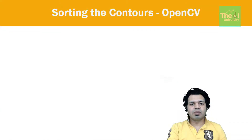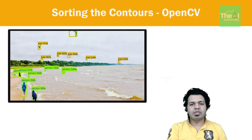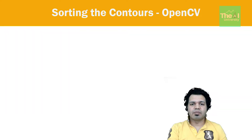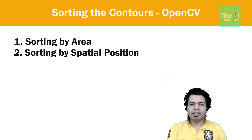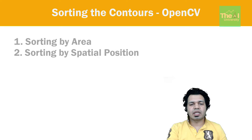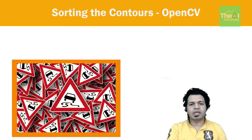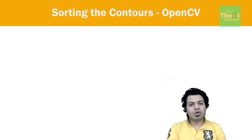Contour sorting is very useful if you are building image detection or image recognition related applications. There are two ways you can sort contours: number one is sorting by area, and number two is sorting by spatial position. Sorting by area is useful when you want to extract large contours representing important parts of an image, and is also useful for getting rid of small contours, thereby reducing potential noise.